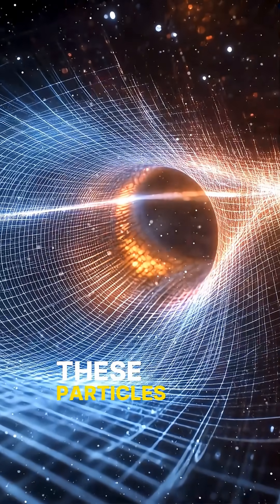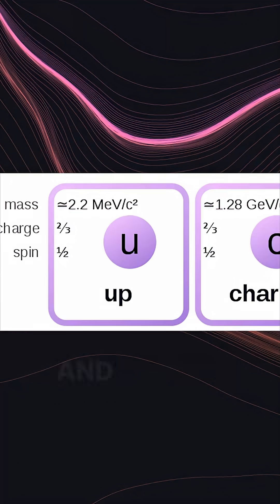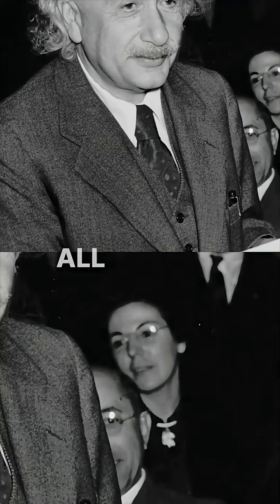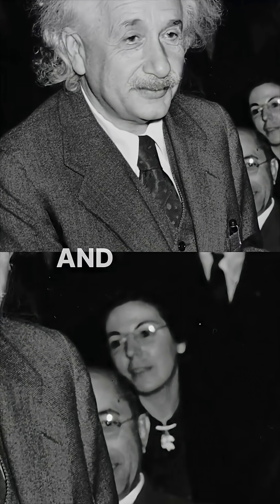And for each of these particles, there are antiparticles, electrons, positrons, quarks and antiquarks, all a consequence of Einstein's view of relative space and relative time.